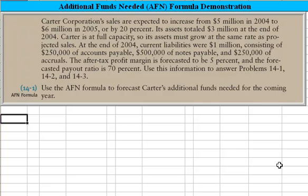Carter Corporation sales are expected to increase from $5 million in 2004 to $6 million in 2005, which is a 20% increase. Its assets were $3 million at the end of 2004. Carter is at full capacity, so its assets must grow at the same rate as projected sales.